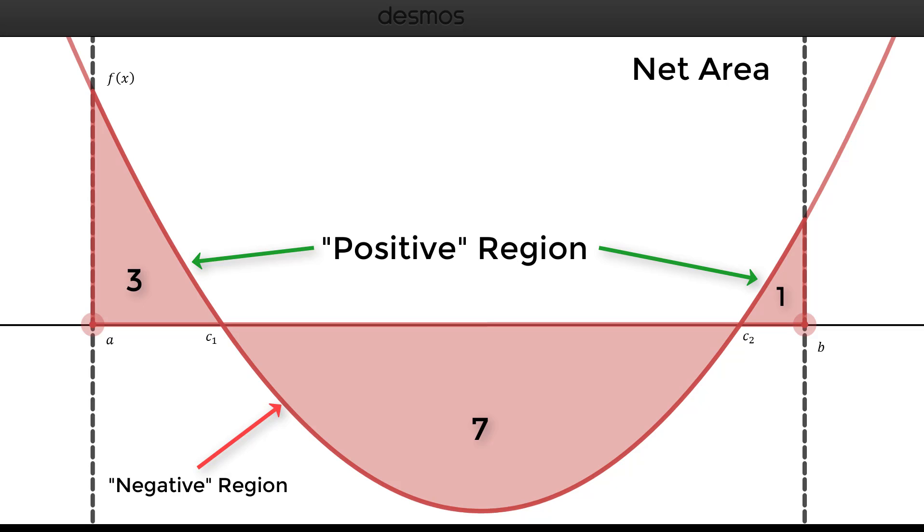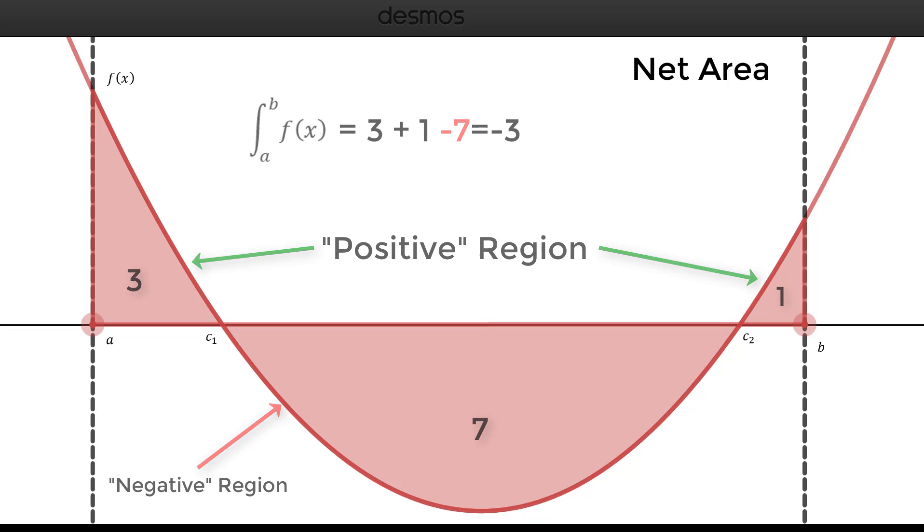then the definite integral from a to b of f(x) dx is equal to 3 plus 1 minus 7. And so 3 plus 1 is 4 minus 7 will give us negative 3, and that will give us the net area. The net area represents the difference between the positive and negative areas.